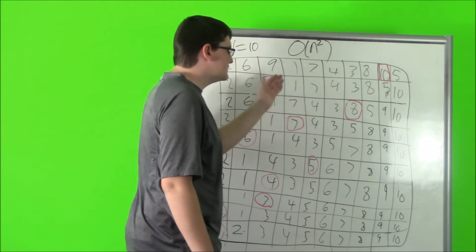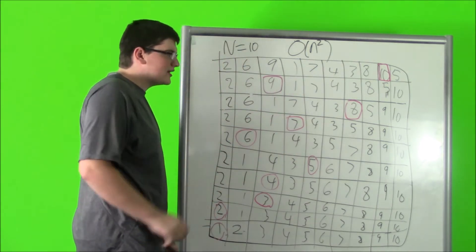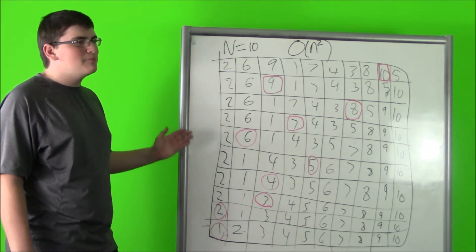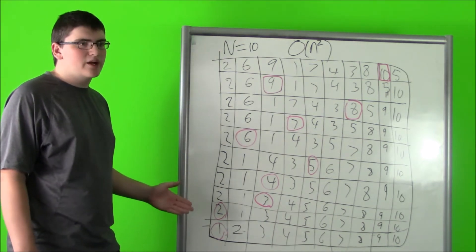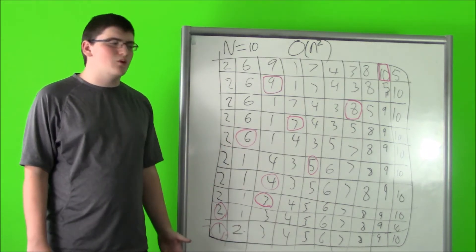It keeps doing that: 8, 7, 6, 5, 4, 3, 2, 1, until it's all sorted. This takes N by N times, or N squared. So the Big O of bubble sort is N squared.